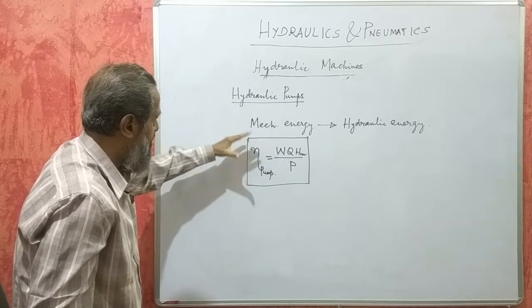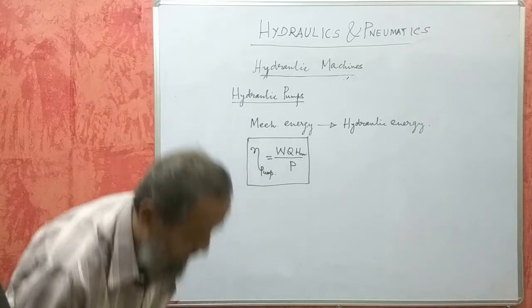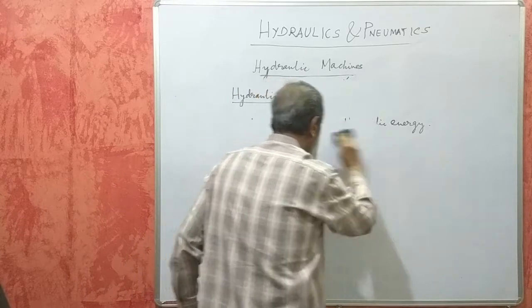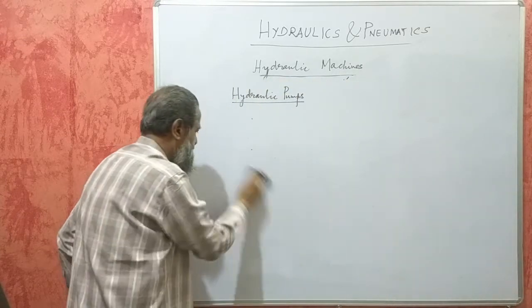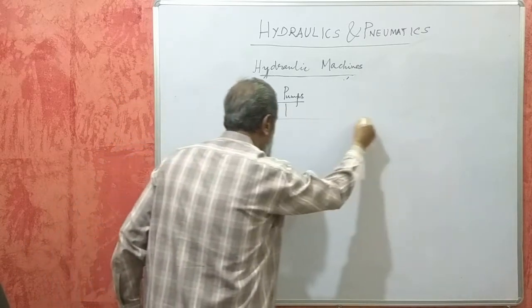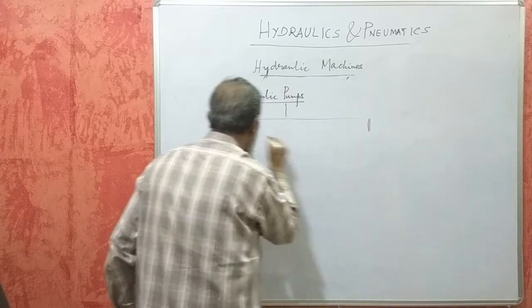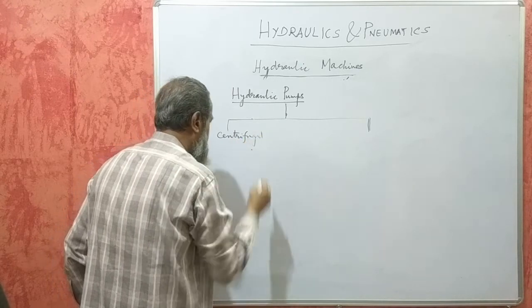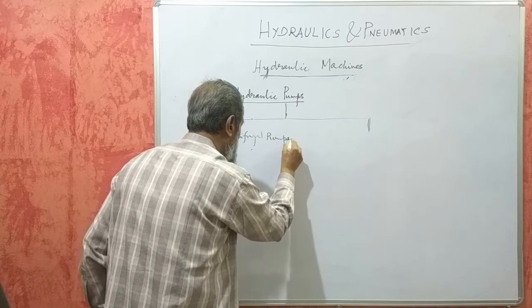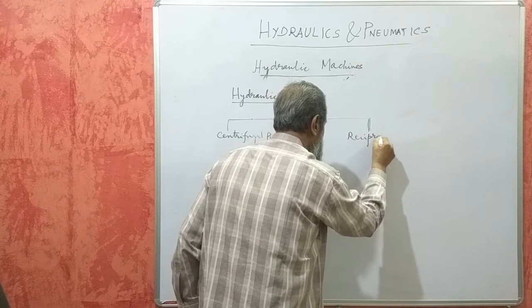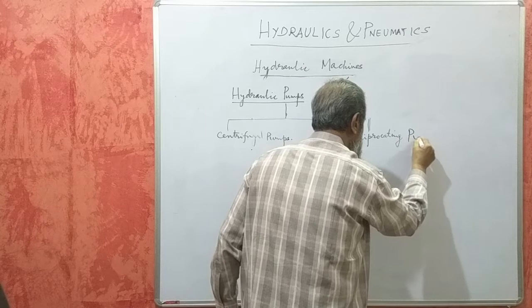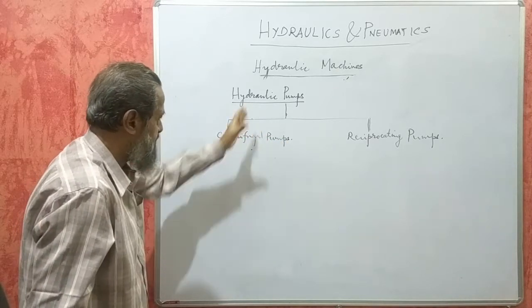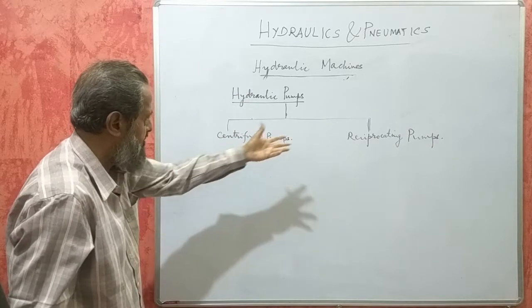We can say that a hydraulic pump is exactly the reverse of a hydraulic turbine. Hydraulic pumps are broadly classified into two types: centrifugal pumps and reciprocating pumps. How are pumps classified? They are classified into two types, namely centrifugal pumps and reciprocating pumps.